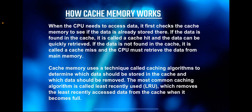Cache memory operates based on a principle called locality of reference. There are two main types: temporal locality and spatial locality. Temporal locality refers to the fact that if data or instructions are accessed once, they are likely to be accessed again in the near future. Spatial locality, on the other hand, means that if a particular memory location is accessed, nearby locations are also likely to be accessed soon.